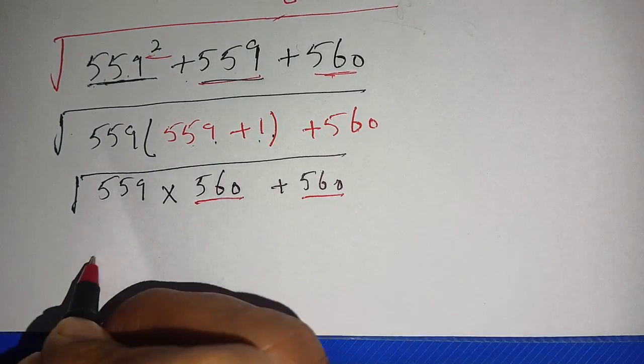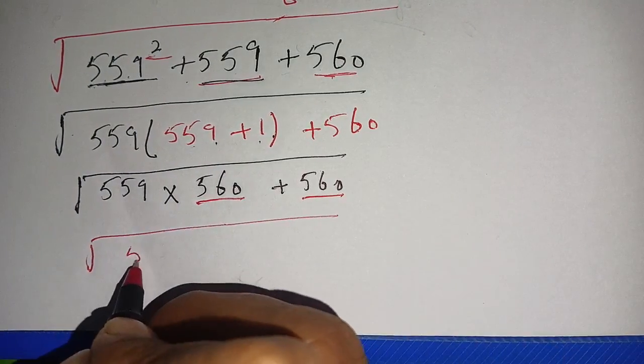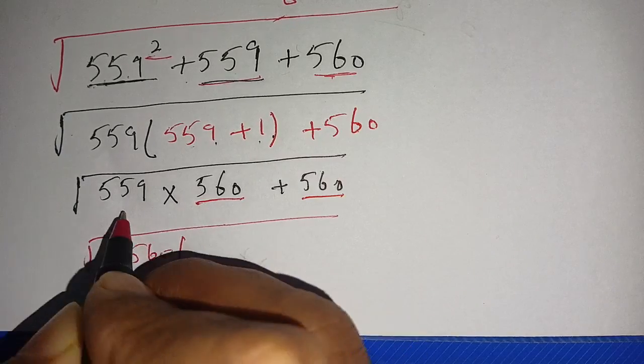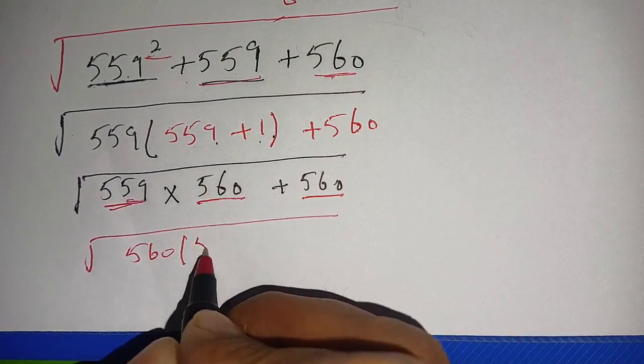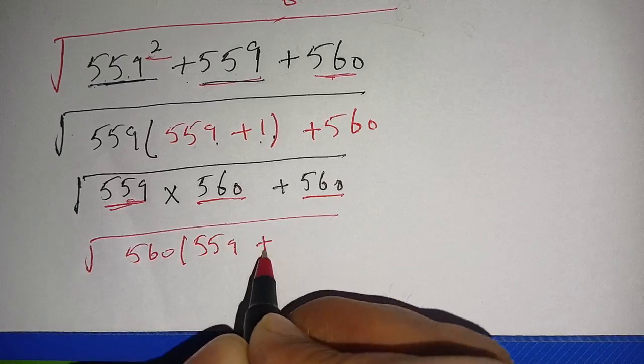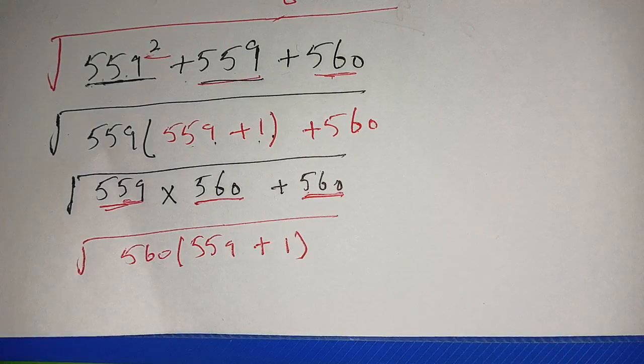On the next step, we take 560 from this term and this term out. We get square root of 560 times the remaining is 559 plus 1.